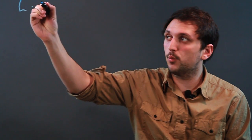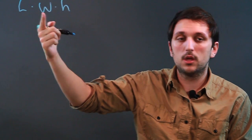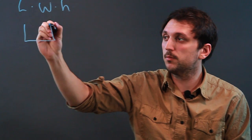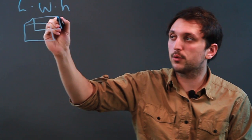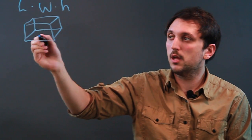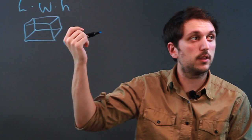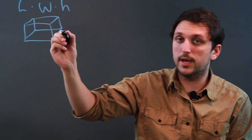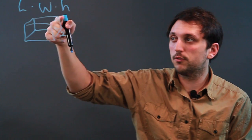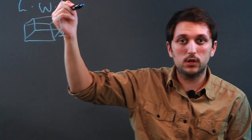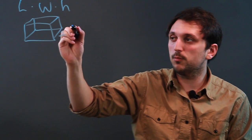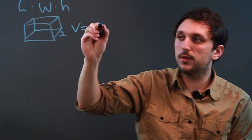So first, the volume of a cube is length times width times height. So if you have a cube, all the sides are going to be the same. And let's say the edge length of our cube is 2. So the volume of the cube is going to be 2 times 2 times 2, so the volume equals 8.